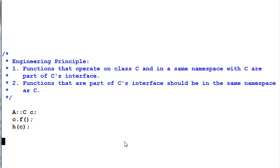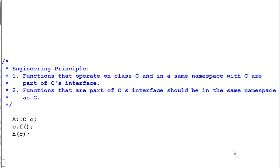Now suppose I'm a little suspicious about this principle. What will happen if I have a non-member function that should belong to C's interface but is not in the same namespace as C? Will it bite me? Let's look at the example.